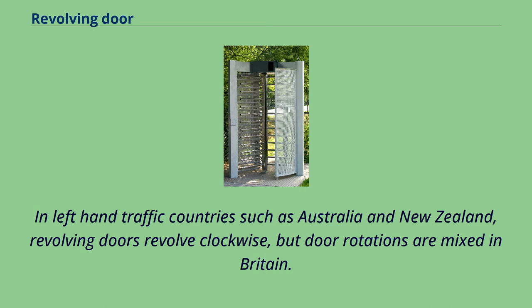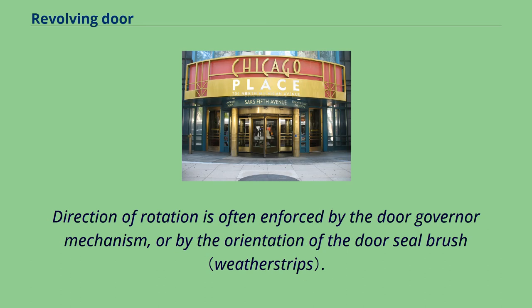In left-hand traffic countries such as Australia and New Zealand, revolving doors revolve clockwise, but door rotations are mixed in Britain. Direction of rotation is often enforced by the door governor mechanism or by the orientation of the door seal brush.